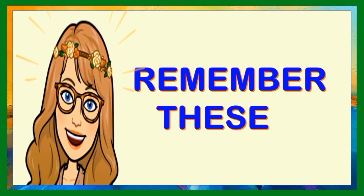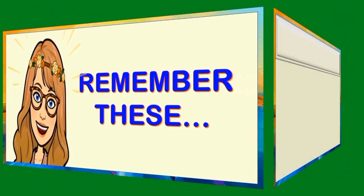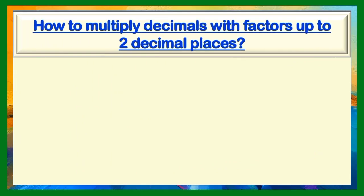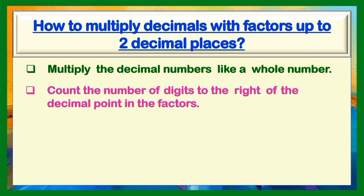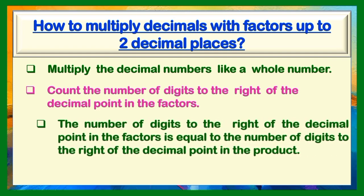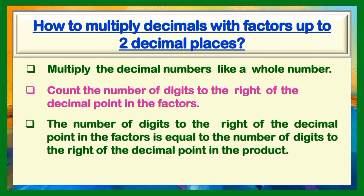Children, remember this. How to multiply decimals with factors up to 2 decimal places. First, multiply the decimal numbers like a whole number. Second, count the number of digits to the right of the decimal point in the factors. Third, the number of digits to the right of the decimal point in the factors is equal to the number of digits to the right of the decimal point in the product. And lastly, add 0 if necessary.